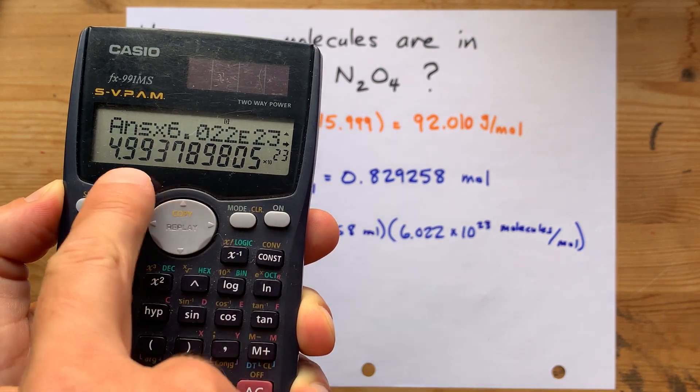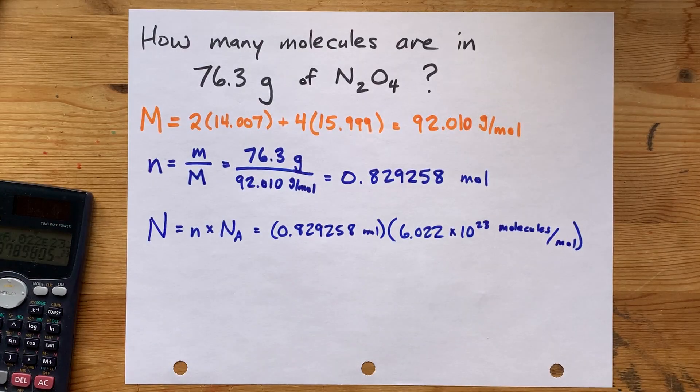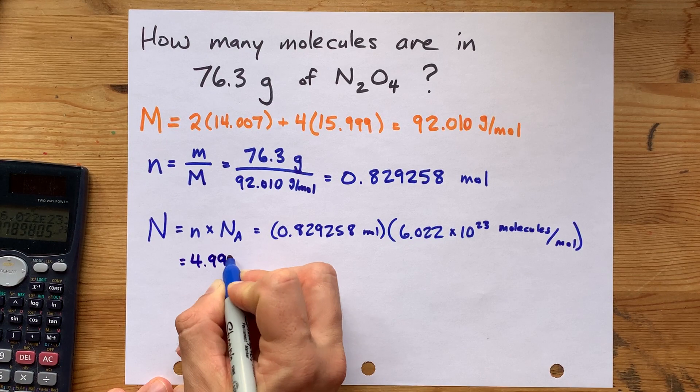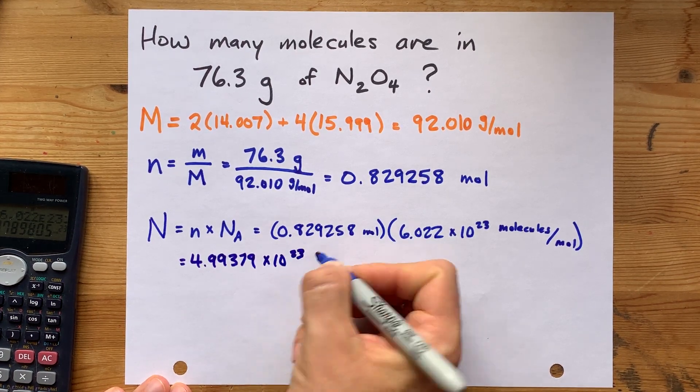You should get 4.99 times 10 to the 23 as a final answer here. So, 4.99379 times 10 to the 23 molecules.